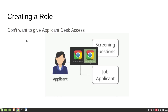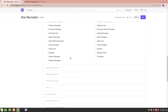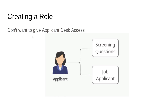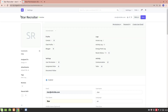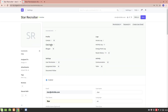Now let's say you want to create a new role. You might want to create a role called Applicant and not give this role desk access — meaning you don't want them to access all the modules and doctypes inside the desk. You just want to restrict them to a portal or website. For this role, you want them to access a custom doctype called Screening Questions with read permission, and also be able to create a Job Applicant doctype.